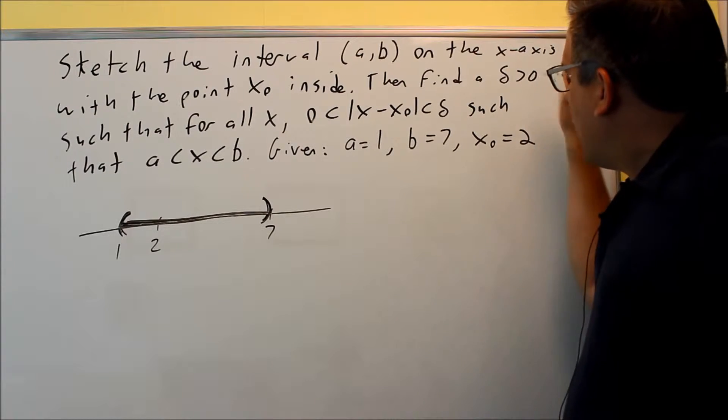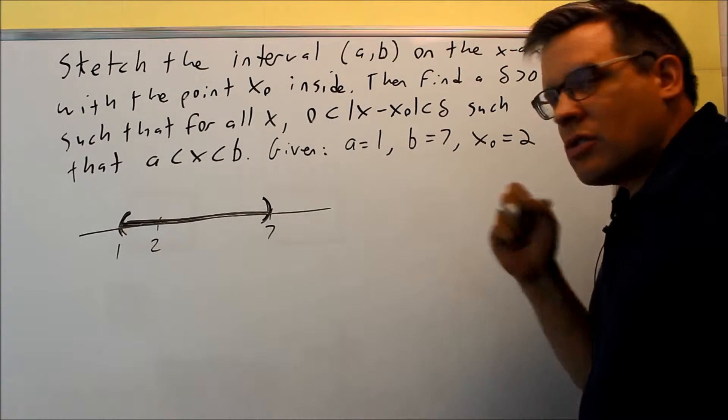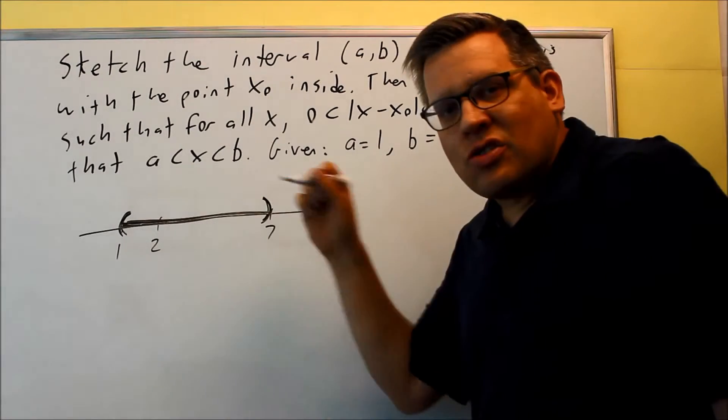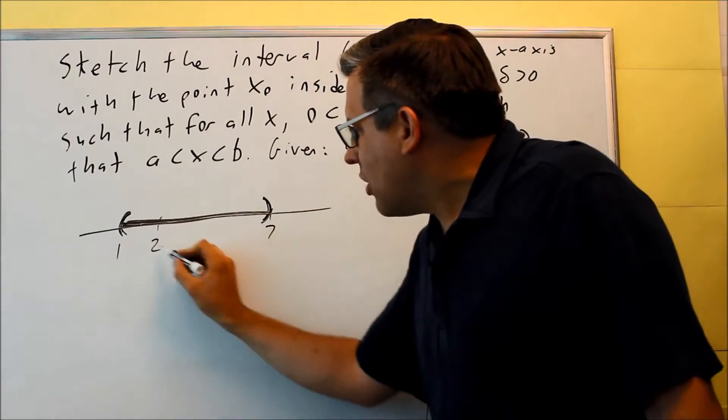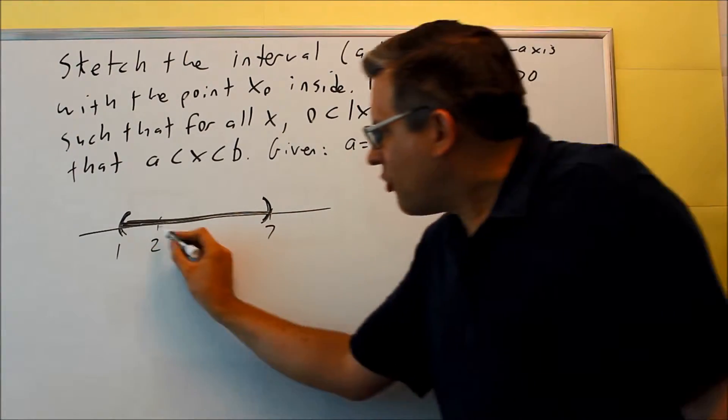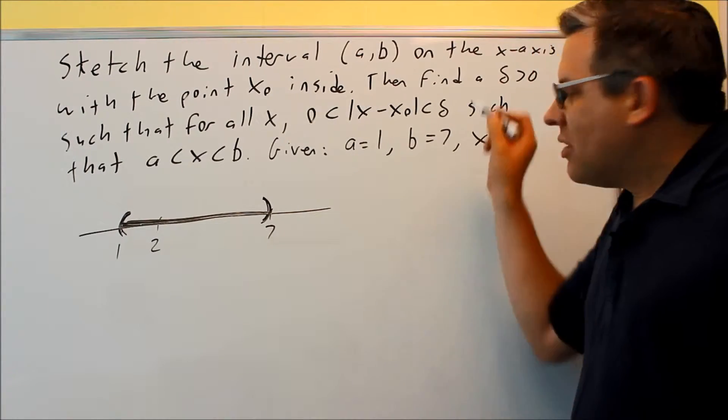Then they asked us to find a delta so that it fits this. Your delta is going to be the shortest distance from x₀ to one of the two endpoints. So the closest distance from x₀ to the endpoints, that's going to be what your delta is.